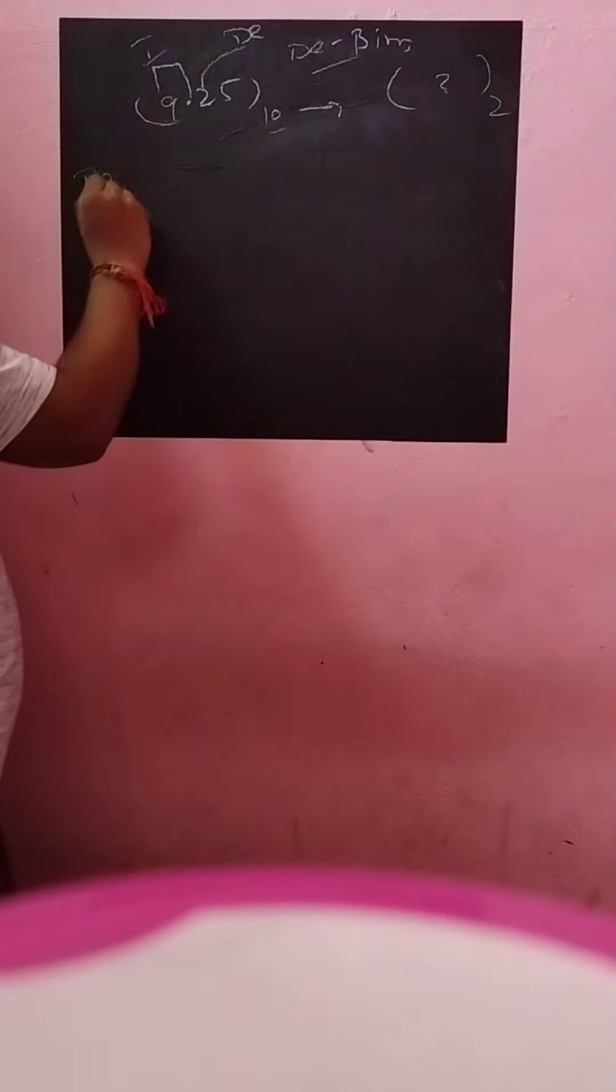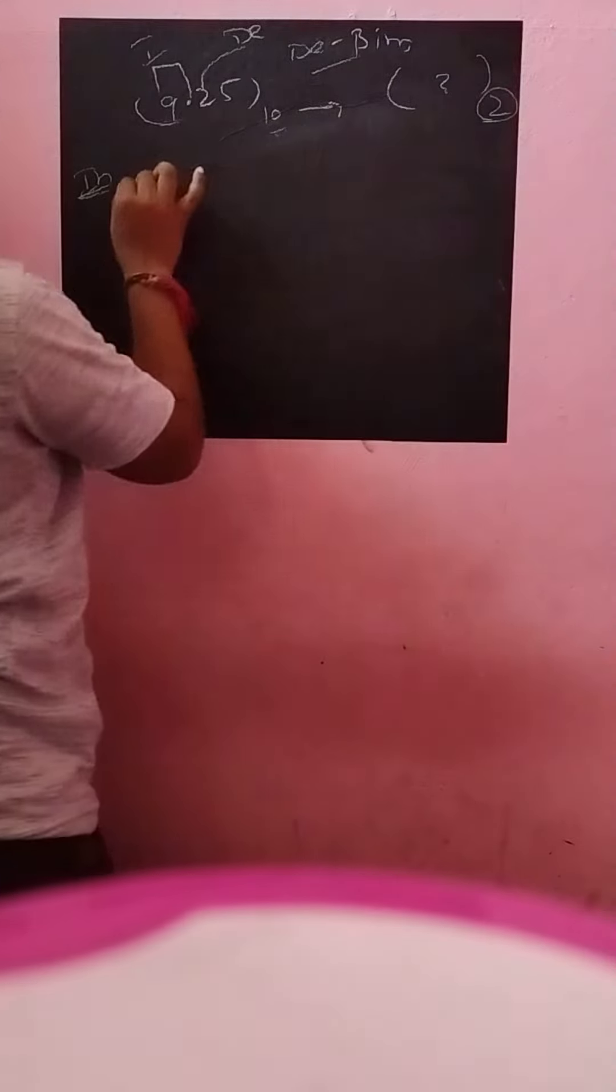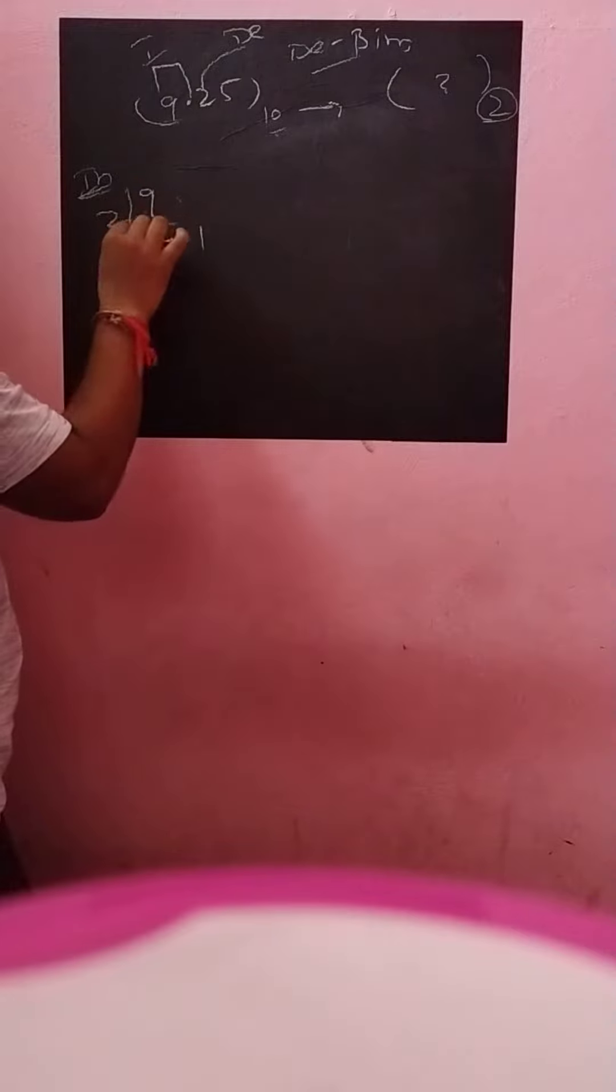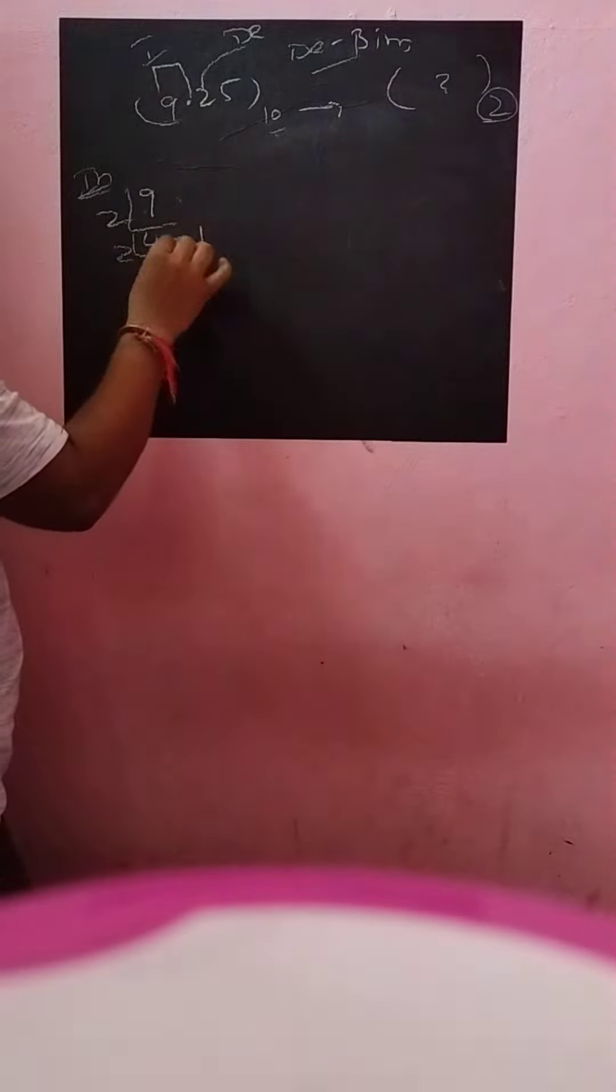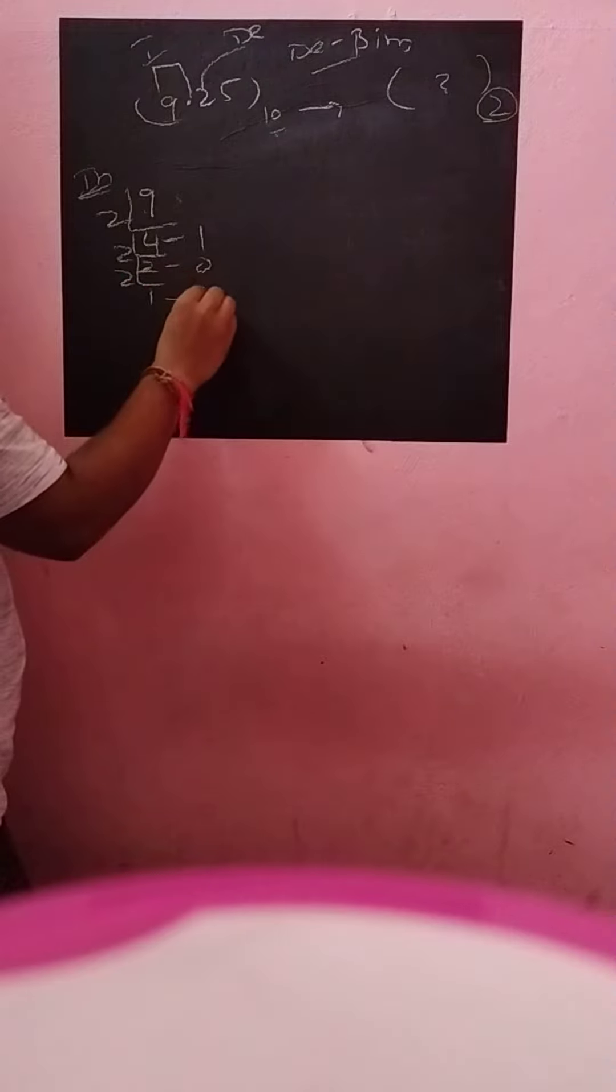For the integer part, what we have to do is divide by the base. 9 divided by 2 gives 4, the remainder is 1. 4 divided by 2 gives 2, the remainder is 0. 2 divided by 2 gives 1, the remainder is 0.